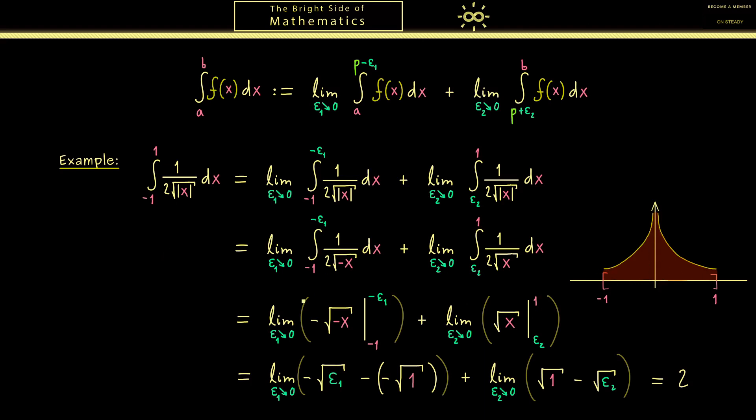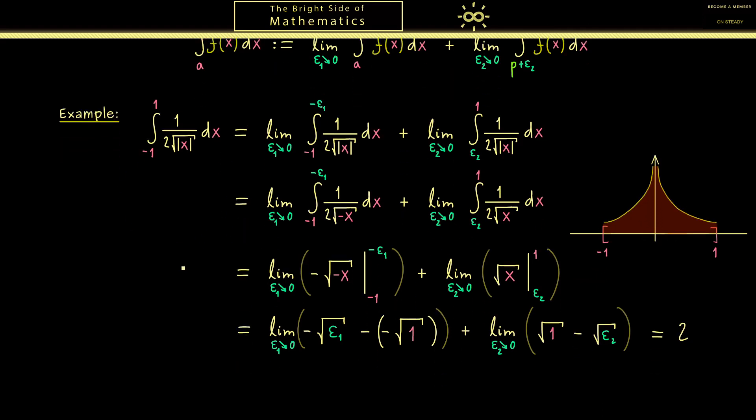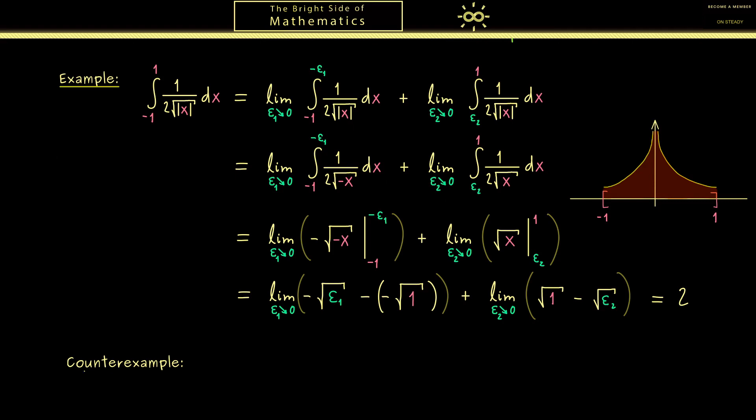On the other hand, we also already know a counter example where the integral does not exist. Namely, this is the integral of 1 over x. So you see this here looks similarly to before because we have an integral from minus 1 to 1. But it turns out that this limit and this limit will not exist. This is simply because the antiderivative is the logarithm, which goes to minus infinity when epsilon goes to 0.